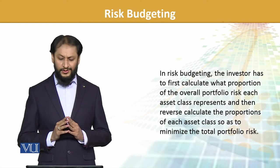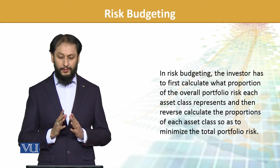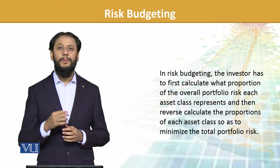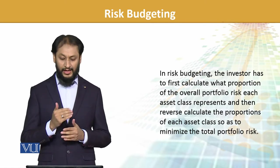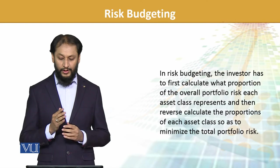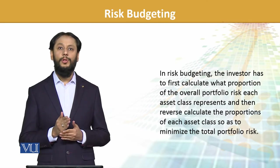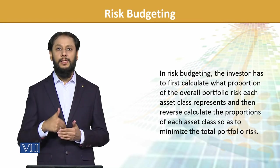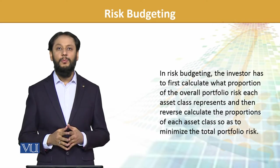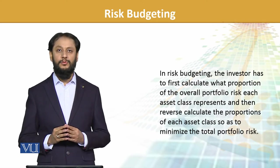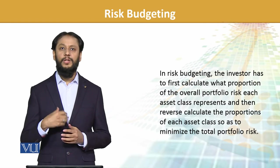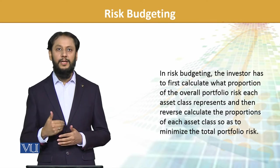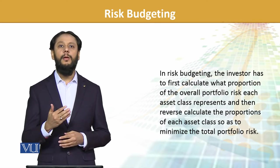In risk budgeting, the investor has to first calculate what proportion of the overall portfolio risk each asset class represents — we should know how much risk each component carries. Then reverse-calculate the proportion of each asset class so as to minimize the total portfolio risk. Based on how much risk we want to take in the portfolio, we determine what the allocation between asset classes should be. It's not just about spreading amounts — we must consider the associated risks, and based on that make the segregation.